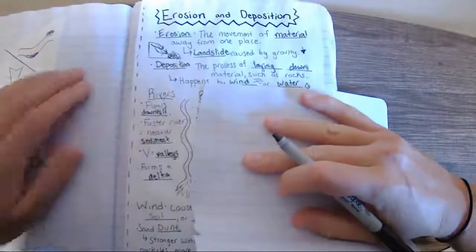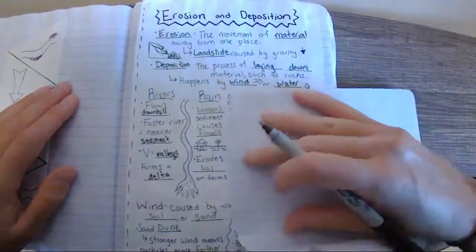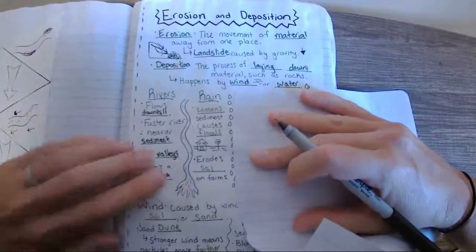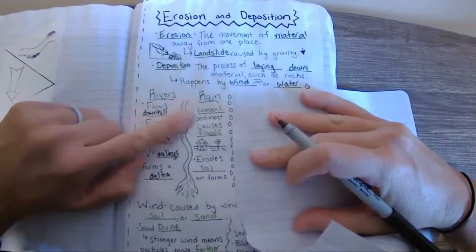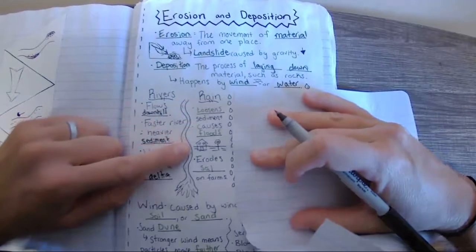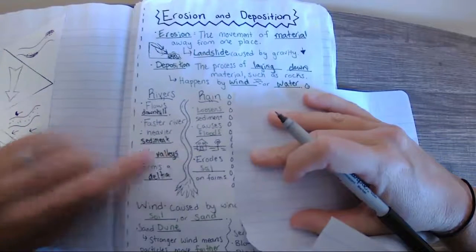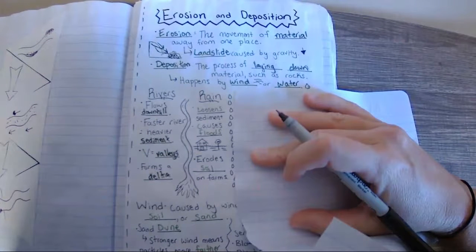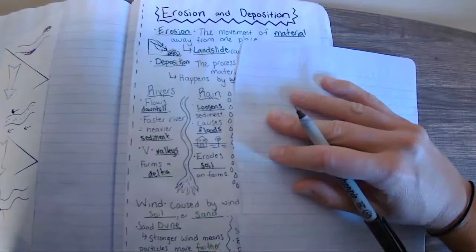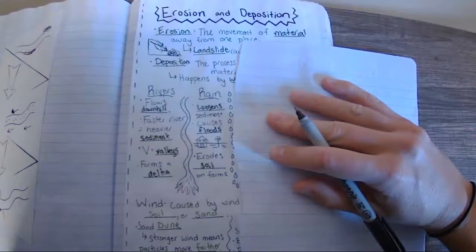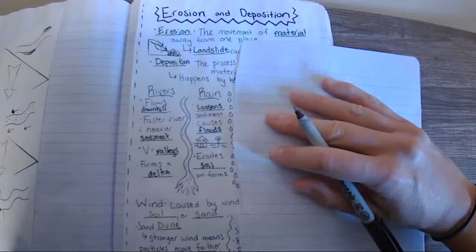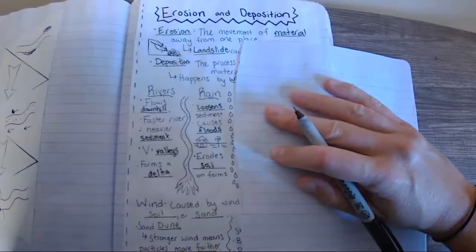Good. Now, the next one over. Sometimes it's caused by rain. Rain loosens the sediment. This can cause floods. It can erode the soil on farms. So I'm going to go ahead and darken those in. I went ahead and darkened the rain. Once again, it loosens the sediment, causes floods, and erodes the soil on farms.